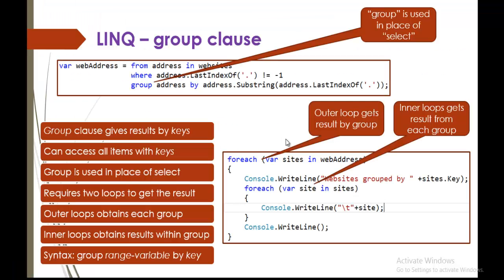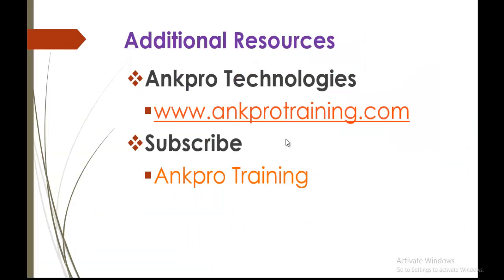This is what we learned in this example — the group clause. Let us recall: group clause gives results by keys, and we require two loops to get the result. The outer loop obtains each group and the inner loop obtains the result within that group. These are the two important points to remember when using the group clause. Thank you for listening, have a great day. Please subscribe to angpro training below.